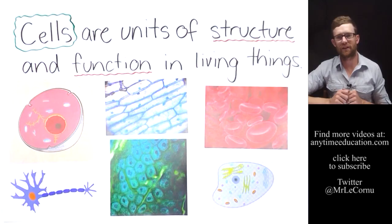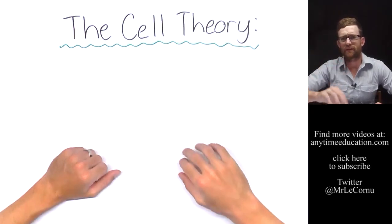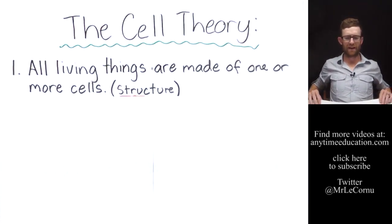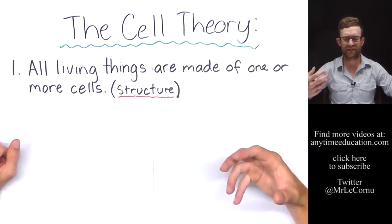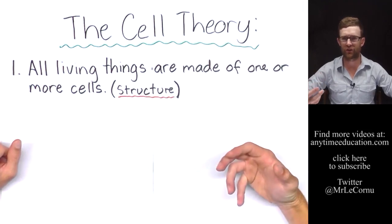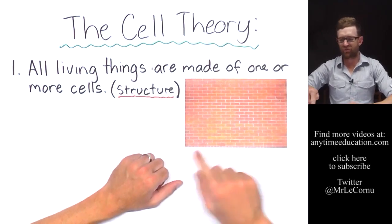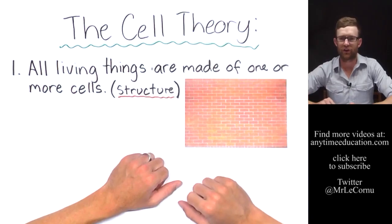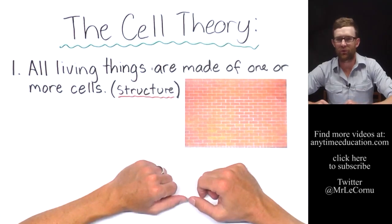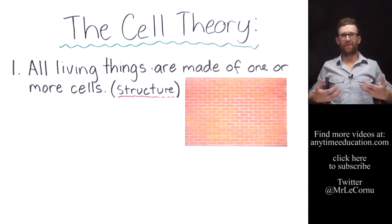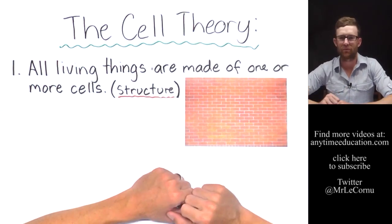Let's have a look at the cell theory. There are four main points. Number one is that all living things are made of one or more cells, and that's how cells contribute to the structure of living things. Imagine a brick wall—each of those bricks is contributing to the overall structure of that wall, and each of those bricks in this analogy could be like a cell. I, for example, am made of billions of cells, just like this brick wall is made of many bricks.